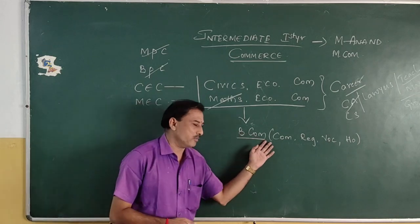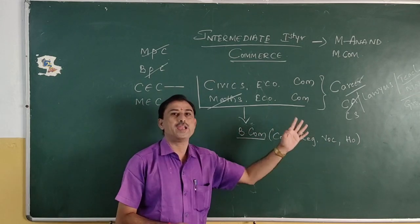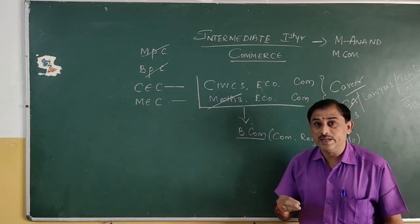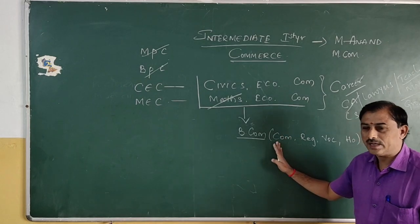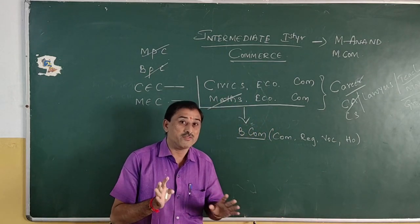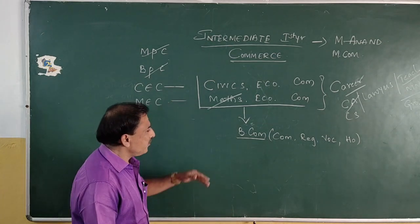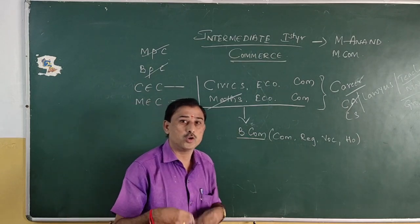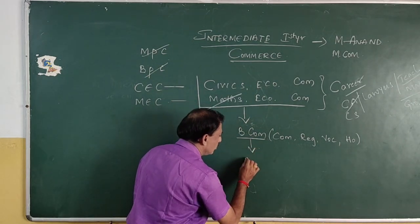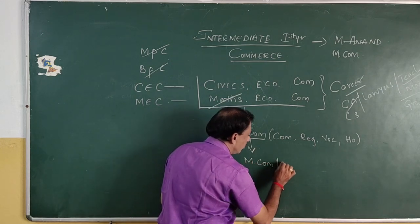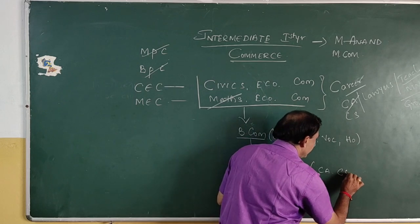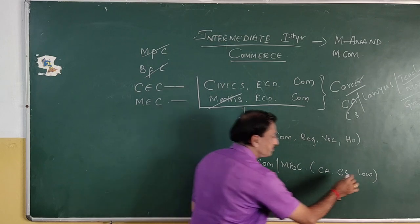Any of the BCOM streams you can opt — Computers, Regulars, Vocational, or Honours. Our college provides degree education in BCOM Computers and Regulars. After completing BCOM, you have the option to go for MCOM, MBA, CA, CS, or Law Degrees. After completing your degree, if you have further interest in studying, you can go for post-graduation.